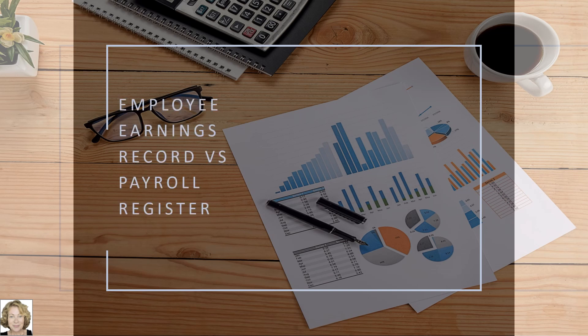In prior videos, we completed the payroll register, which is the primary tool used to compute each payroll amount. The payroll register contains all the payroll information for a payroll period and is a tool used by accountants to ensure payroll accuracy. In this video, we'll look at the employee's earnings records, which forms the link between the accounting and the human resource departments, and will compare it to the payroll register.